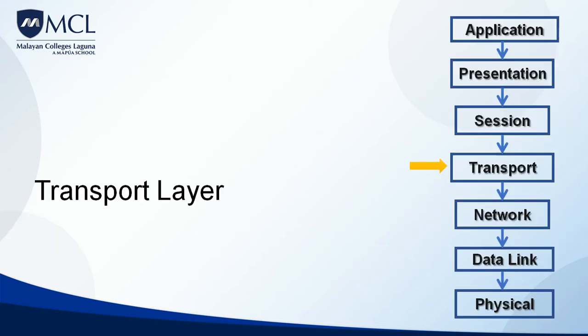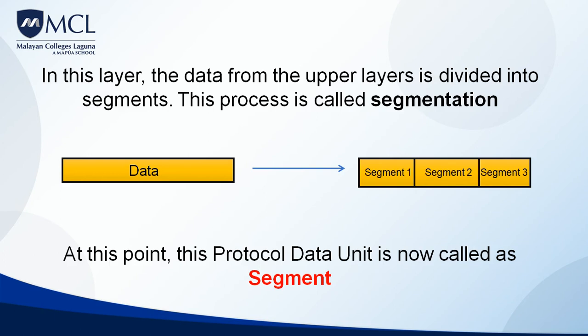Let's proceed to the fourth layer, which is the transport layer. In this layer, data from the upper layers is divided into segments — this is called segmentation. At this point, the protocol data unit is no longer called data; it's called a segment because it has been segmented and divided into parts.